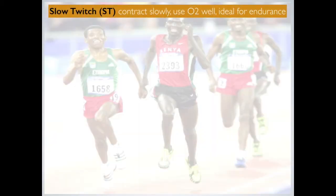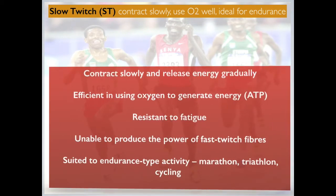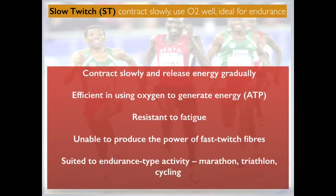Slow-twitch fibres contract slowly. They use oxygen very well and are ideal for endurance events. They release energy very gradually, are very efficient in using oxygen and generating ATP, and are resistant to fatigue, but are unable to produce the power of fast-twitch fibres. They are suited to endurance-type activities such as marathon, triathlon, or cycling.